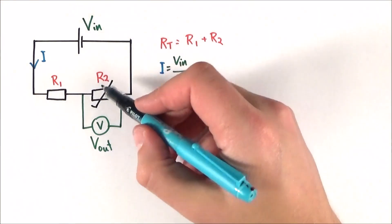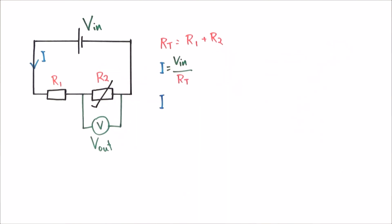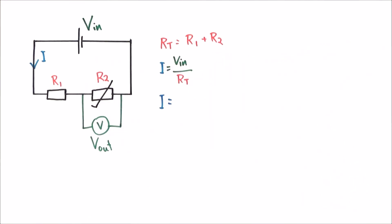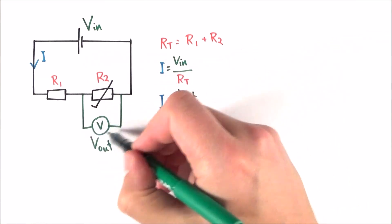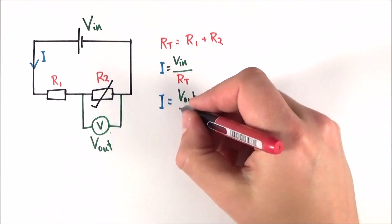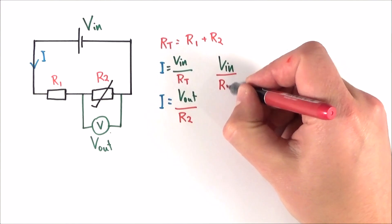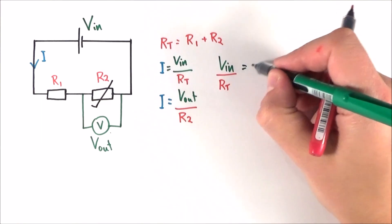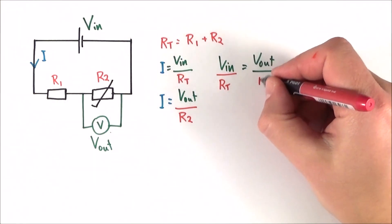But if we consider the current that flows through R2, we could also say that this current is going to be equal to the value of V out, this V out is going to be the potential difference across this component divided by the value of R2. And if we know that the current is the same everywhere in that circuit, what we can write is that V in over RT is going to be equal to V out divided by R2.